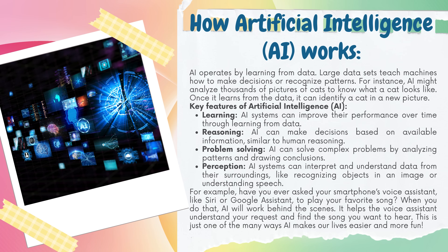Key features of Artificial Intelligence: Learning — AI systems can improve their performance over time through learning from data. Reasoning — AI can make decisions based on available information, similar to human reasoning. Problem-solving — AI can solve complex problems by analyzing patterns and drawing conclusions. Perception — AI systems can interpret and understand data from their surroundings, like recognizing objects in an image or understanding speech. For example, when you ask your smartphone's voice assistant, like Siri or Google Assistant, to play your favorite song, AI works behind the scenes to understand your request and find the song you want to hear.